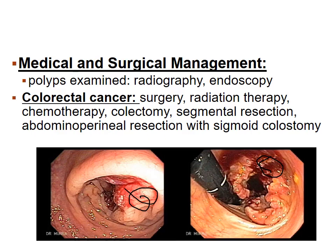After identifying cancer on colonoscopy, the physician may attempt to remove some of it with the scope and burn off bleeding areas. The patient is then typically prepared for surgery. Options include radiation, or surgical removal of the cancerous portion of the colon — the preferred method — which can essentially cure the patient if cancer is confined to the bowel.